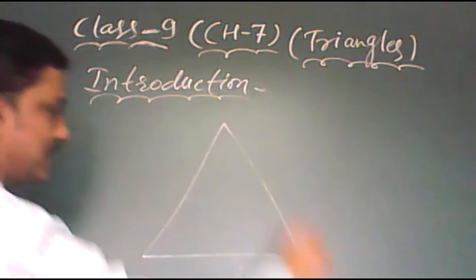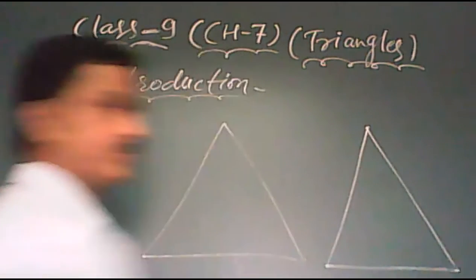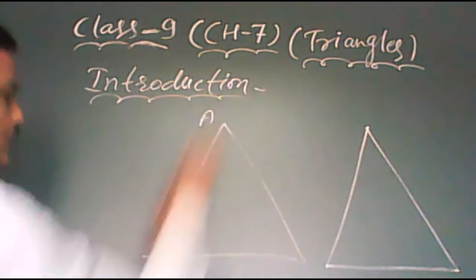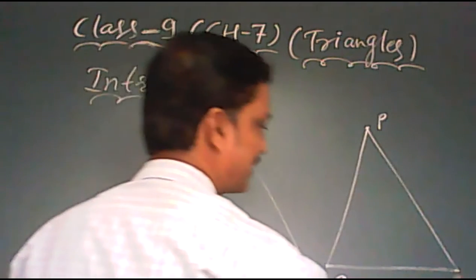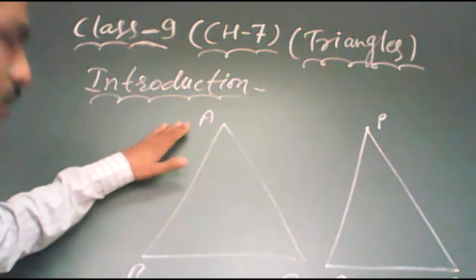When two triangles are separately congruent, before that, we need to understand what is the meaning of corresponding part, as we already discussed in class 7. Here we have two triangles.